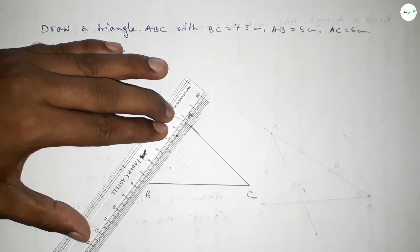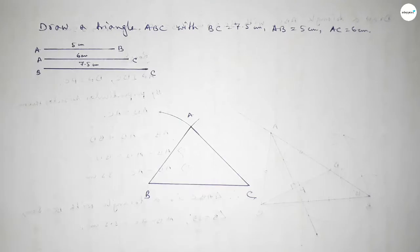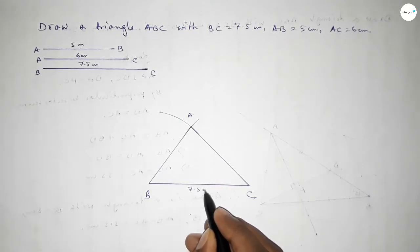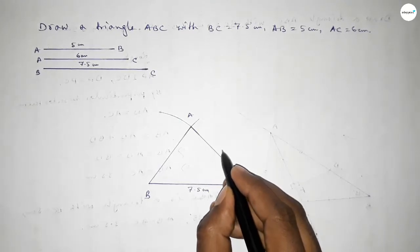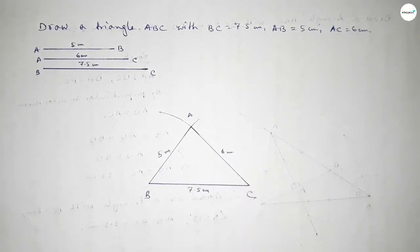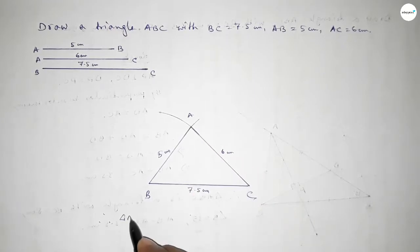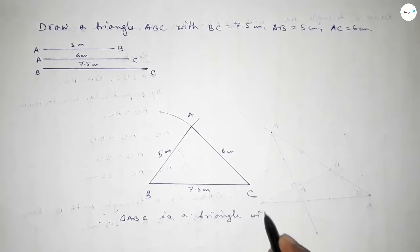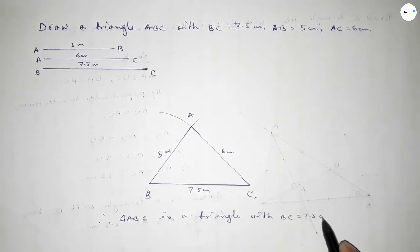Now first joining A and C, and then joining A and B. So BC equal to 7.5 centimeters, and this is 6 centimeters, and this one is 5 centimeters. Therefore triangle ABC is constructed.